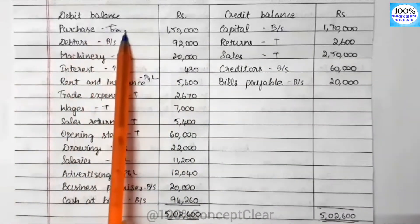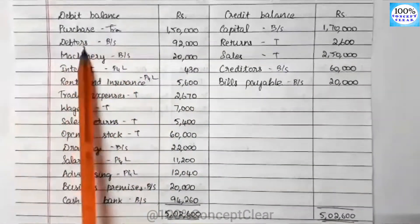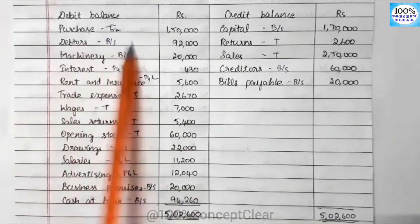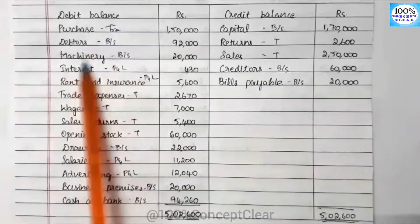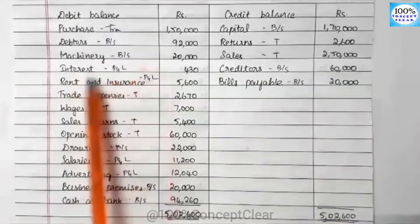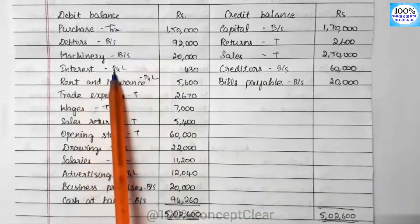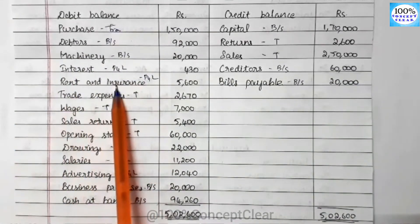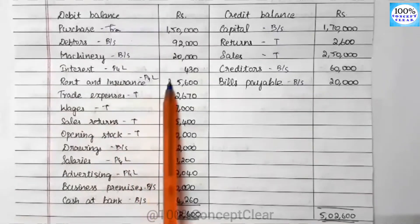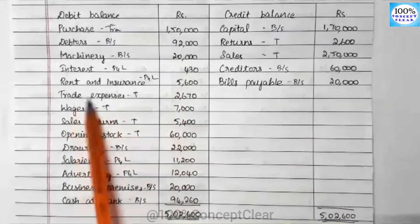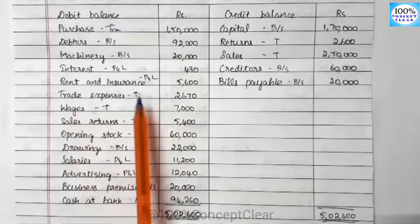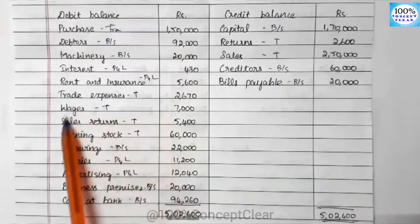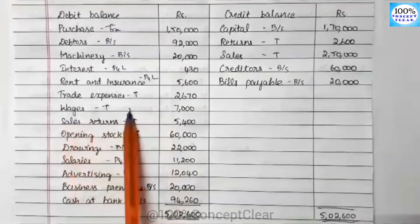Purchase is one of the Trading account items. Debtors is one of the Balance Sheet items. Pensionary is one of the Balance Sheet. Interest is one of the P&L account. Rent and insurance is one of the P&L account. Trade expenses is one of the Trading account. Wages is one of the Trading account.